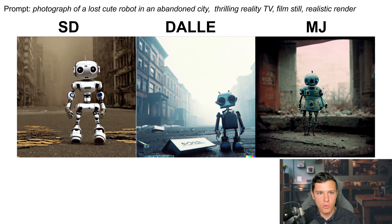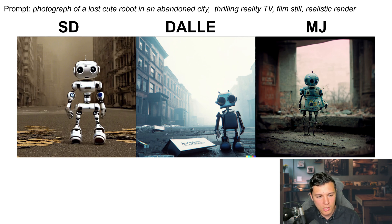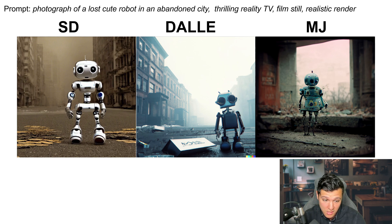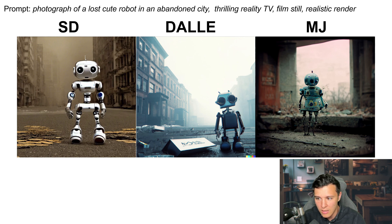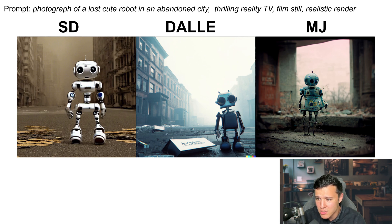The prompt is 'photograph of a lost cute robot in an abandoned city, thrilling reality TV, film still, realistic render.' Stable Diffusion does a cool environment but then photoshops in a robot that doesn't look good at all — the lighting doesn't match and it just looks pasted in. DALL-E does a much better job — it matches well and looks really cool, and the environment definitely looks abandoned. Midjourney also looks pretty cool but doesn't look as cute as the DALL-E one. DALL-E is the winner, followed by Midjourney, then Stable Diffusion.